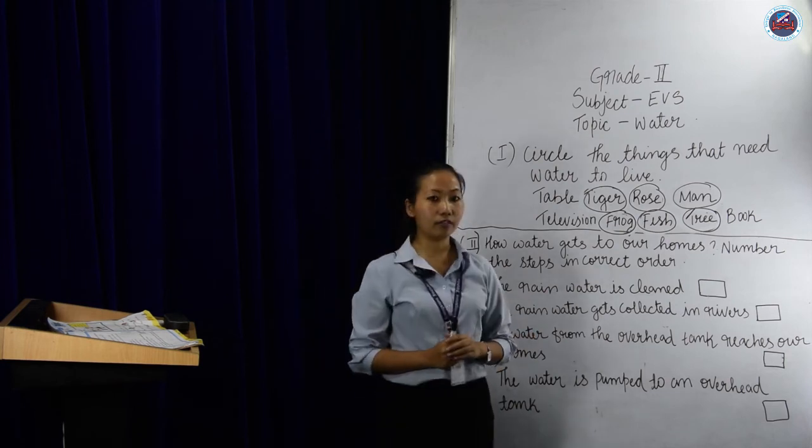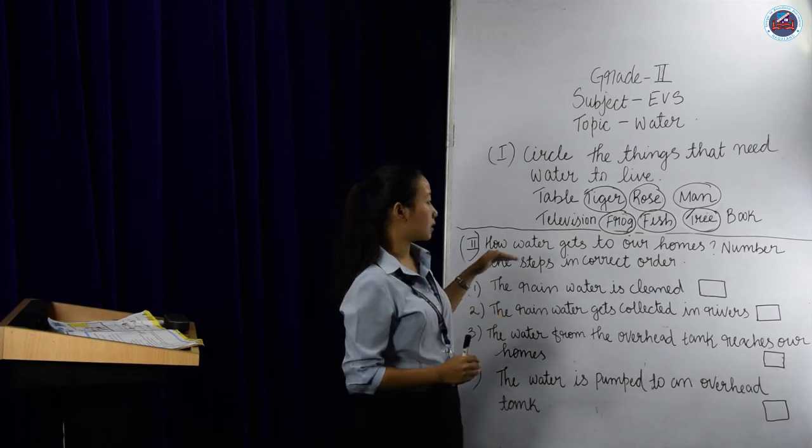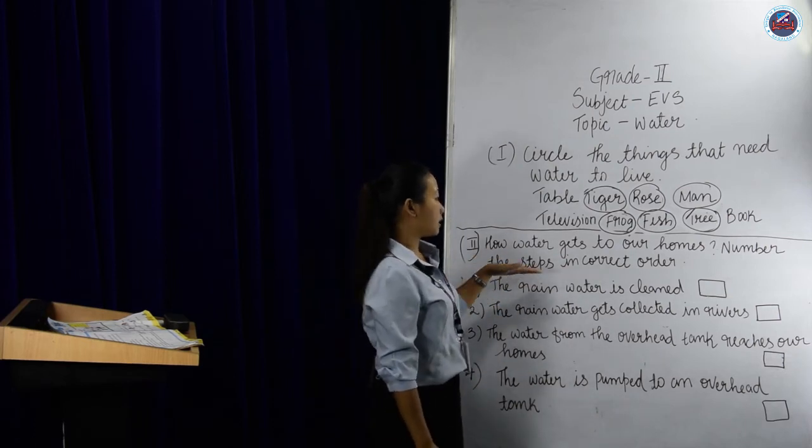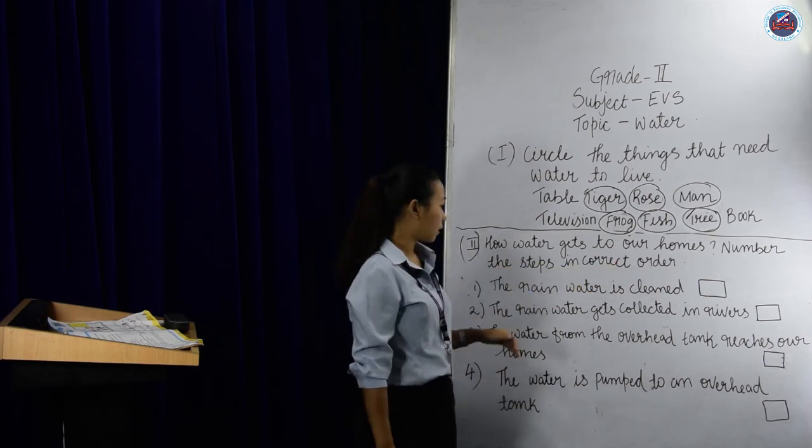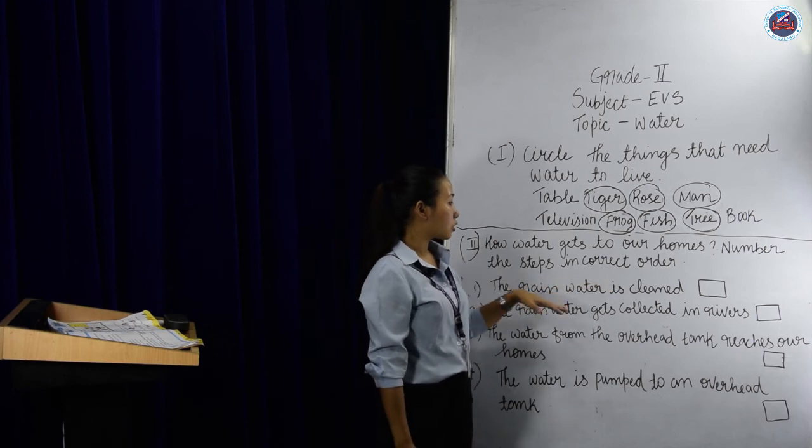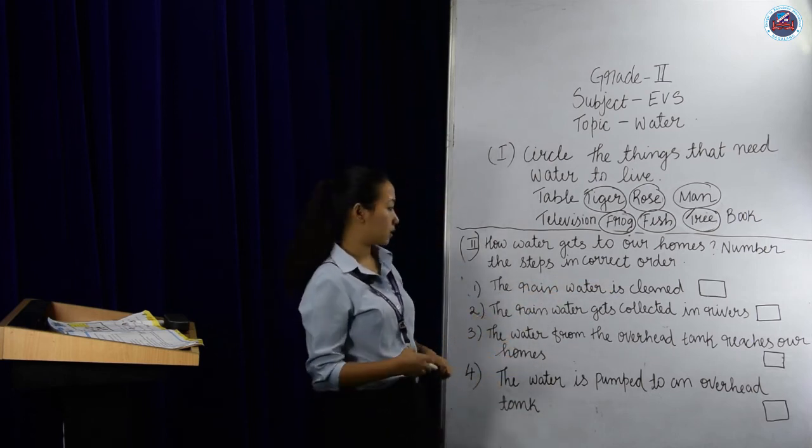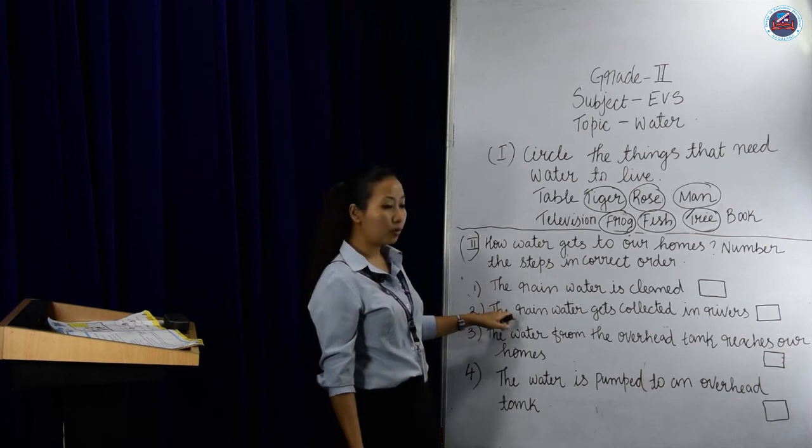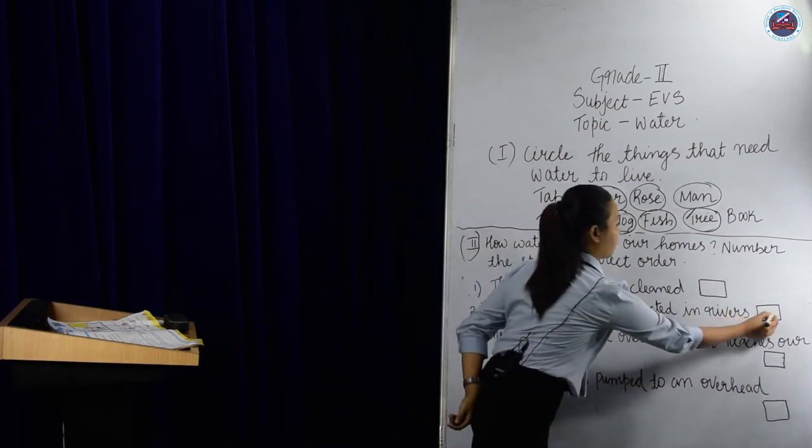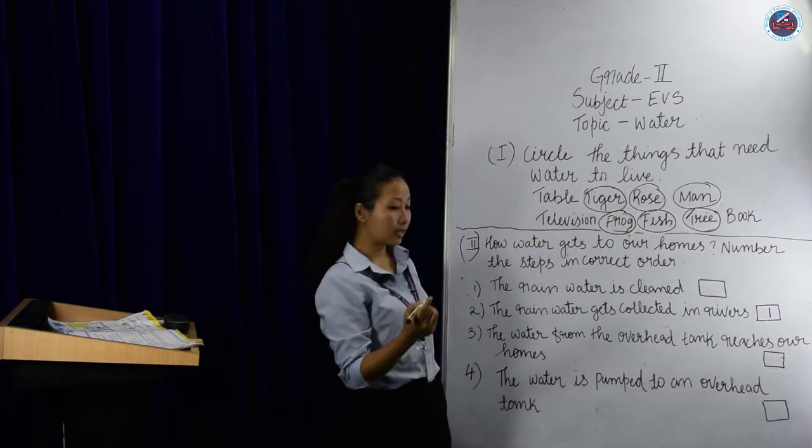Now let us try to do one activity as we have learned in the third topic, that is how water gets to our homes. Here we have to number the steps in correct order. Let us see. The first step is the rain water is clean. So what is the first step? How the water gets into our homes? The first one is the rain water gets collected in river. This is the first step.